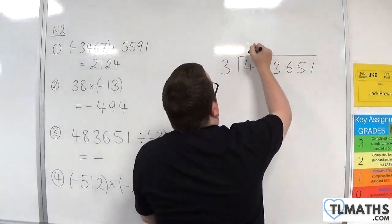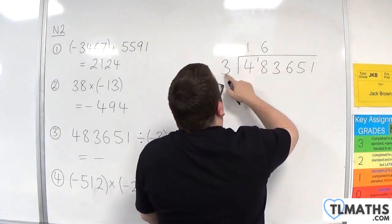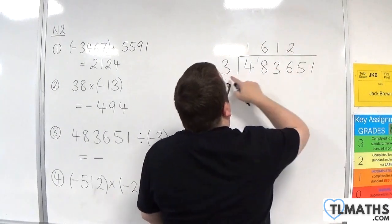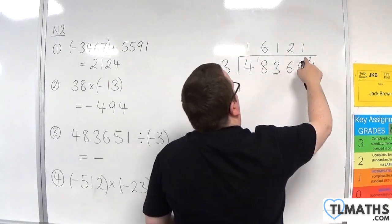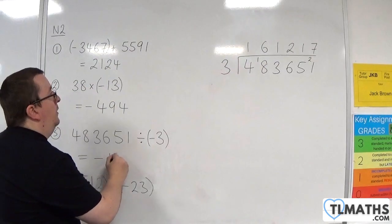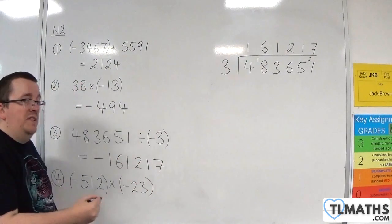So 3s into 4 go once with one remainder. 3s into 18 go 6. 3s into 3 go once. 3s into 6 go twice. 3s into 5 go once with remainder 2. 3s into 21 go 7. So I know my answer is minus 161,217.